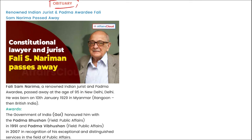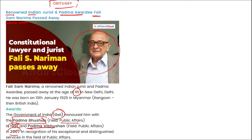Renowned Indian jurist and Padma awardee Fali S. Nariman recently passed away at the age of 95. The Government of India honored him with the Padma Bhushan in 1991 and the Padma Vibhushan in 2007, both in the field of public affairs. He was also the recipient of the 19th Lal Bahadur Shastri Award for Excellence in Public Administration in 2018.